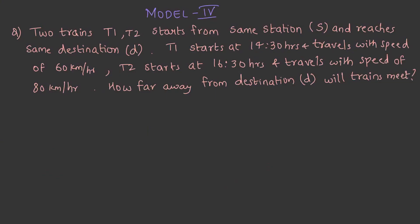We are into the final lecture of this topic. Here is the next model. In this, it is given that two trains T1, T2 starts from the same station S and reaches the same destination D. So, destination and the starting station are same.